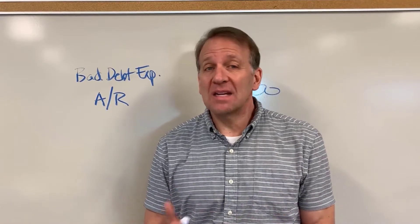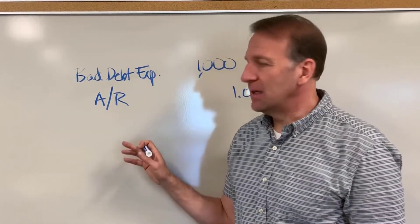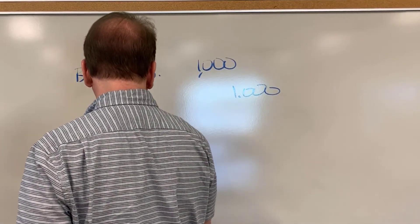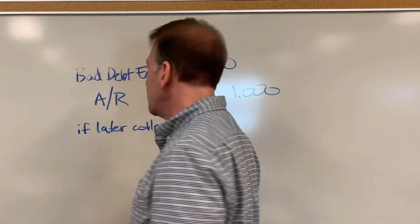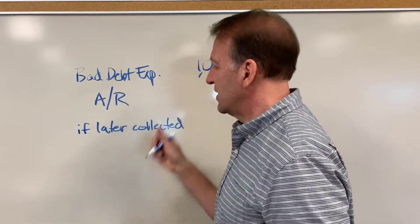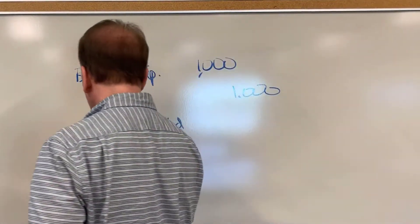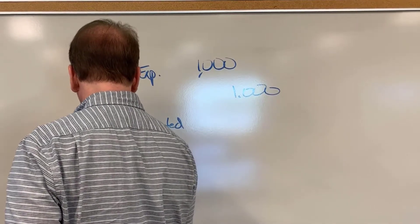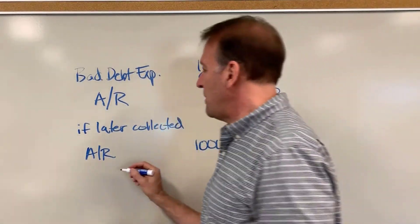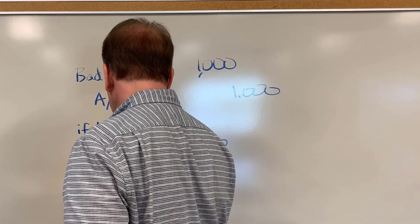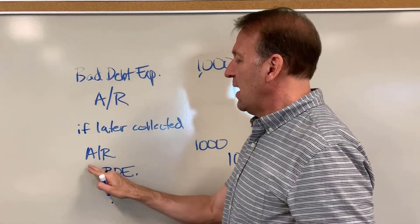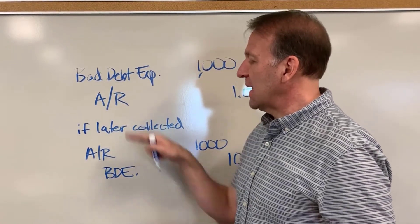At times, it will later be collected — it doesn't happen very often, but it can. So if it's later collected, this is a double journal entry that we have to record. First of all, we've got to reverse this out because we got the money. We need to reestablish our accounts receivable for a thousand dollars, and then we have to reverse out the bad debt expense. So there's the reestablishing of the accounts receivable and backing out the bad debt expense.